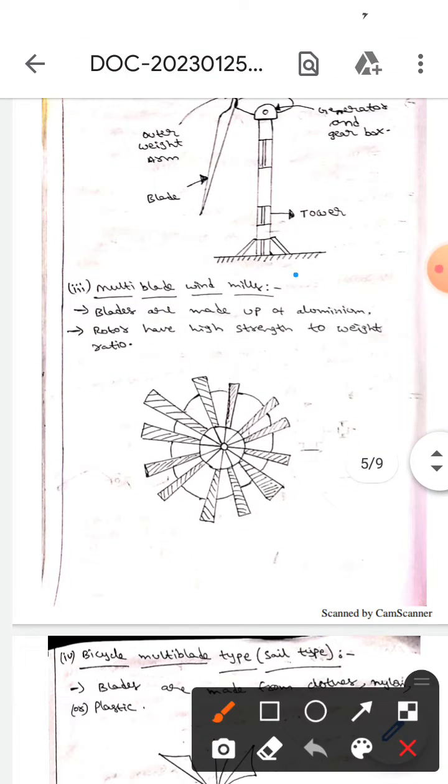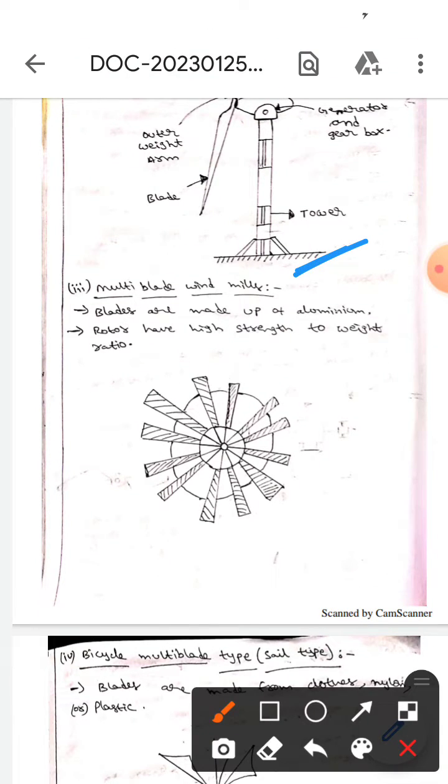The next one is multi blade windmills. Here blades are made up of aluminum and the rotor has high strength to weight ratio. This diagram represents the multi blade windmills. You can take a screenshot if you want.